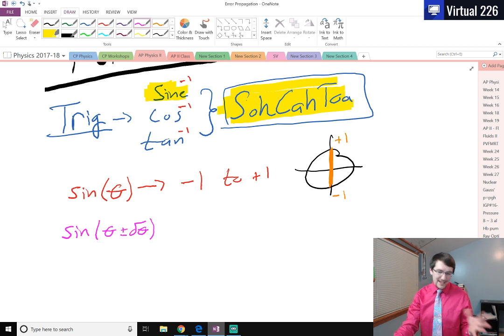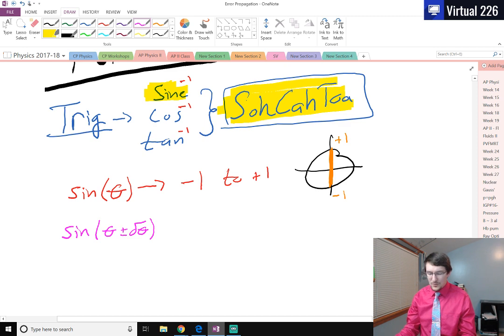Which means we're not just going to get a value back negative 1 to 1. We're going to get a value back negative 1 to 1 with a little bit of error. It still has to be within that range of negative 1 to 1, but there's some error associated to it. Because of that, we need to apply a proper error propagation here.